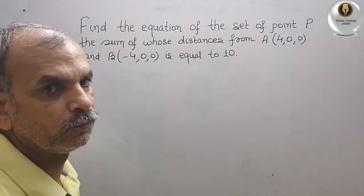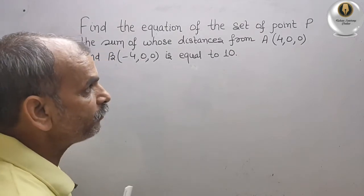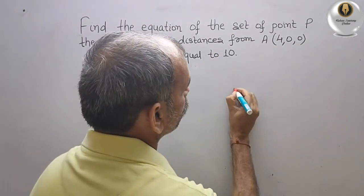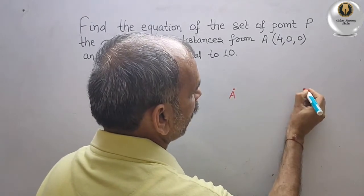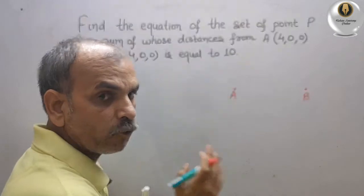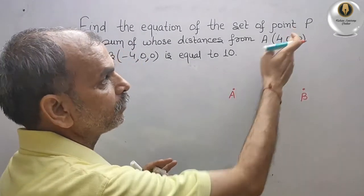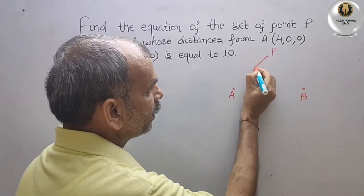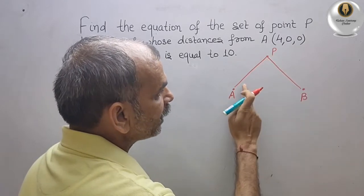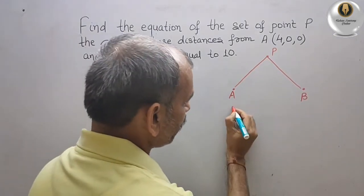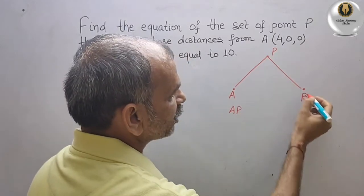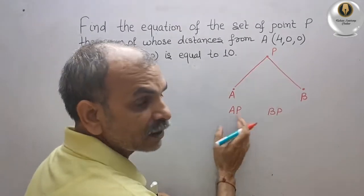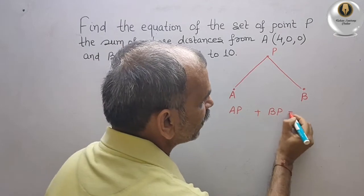What he has told? Suppose we take this as A and this as B — these are the two points. Now there is a point P. This is the point P, and here it contains the distances AP and BP. What he has told? If you sum these distances, you will get the value 10.